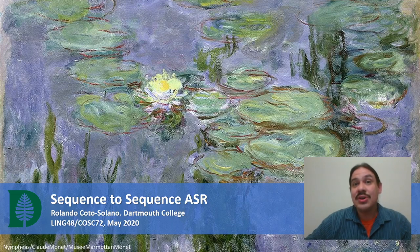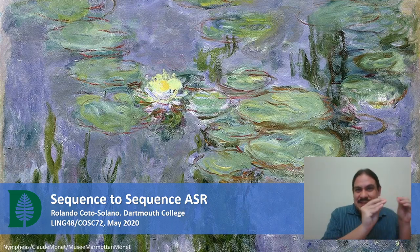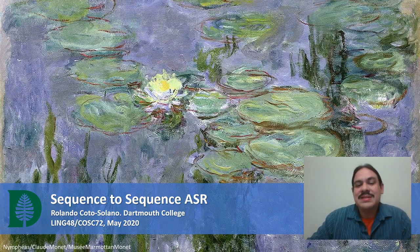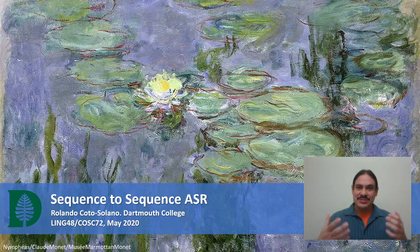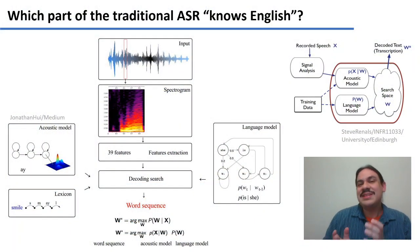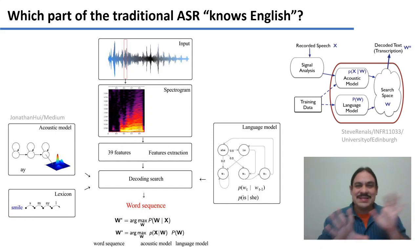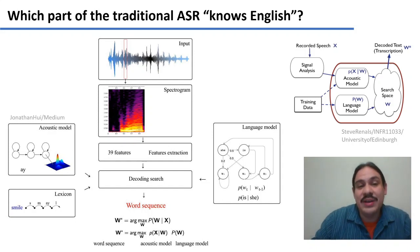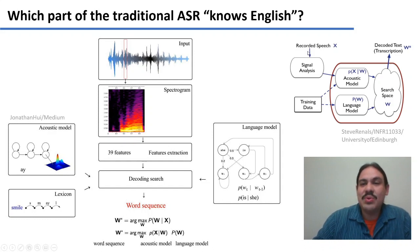In the last video we looked at traditional architectures for speech recognition, where you break up the problem into smaller pieces. Here we'll look at sequence-to-sequence speech recognition, using more modern neural network and deep learning architectures. The main question we need to ask is: who in all these systems knows English, or knows the language we're trying to decipher?